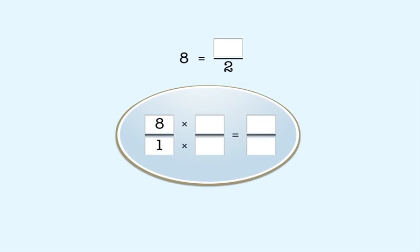Next, we multiply both the numerator and denominator by 2. The fraction we get is 16 halves. So the whole number 8 can be written as the fraction 16 halves.